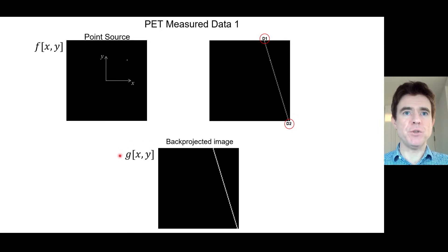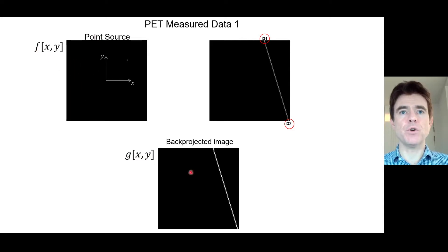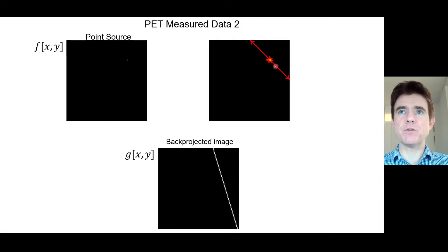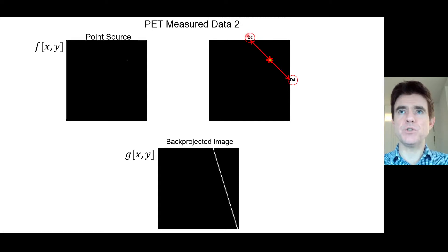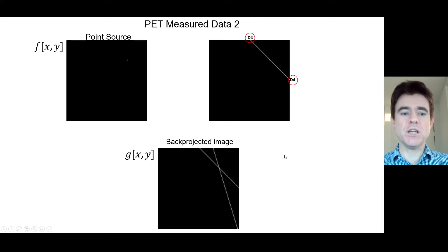The back-projected image is called a function g — an amplitude or intensity as a function of x and y. For a second back-to-back photon pair emitted from that same point source, the photons are detected at particular positions d3 and d4, and again we back-project along that line in our separate array to form the back-projected image.